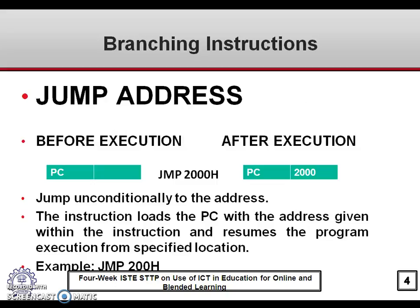Now let us look at the jump instruction. This is the unconditional jump: JMP 2000H. The program sequence should be transferred to memory location 2000H. For that, the content of the PC should be 2000H. Before execution, the content of PC may be anything, but when this instruction is executed, the content of the program counter PC becomes 2000H, and the program sequence will begin from 2000H.